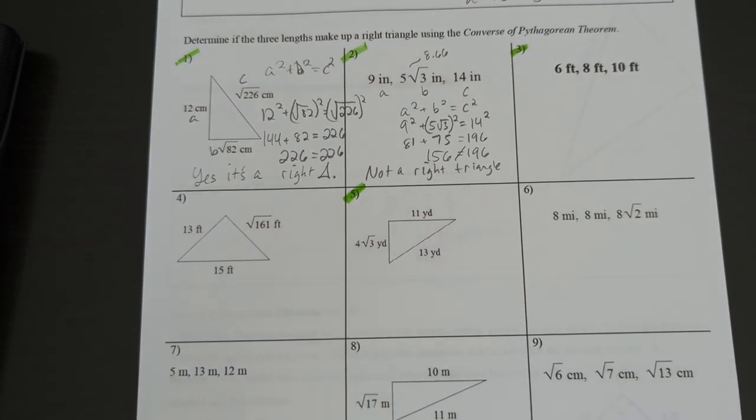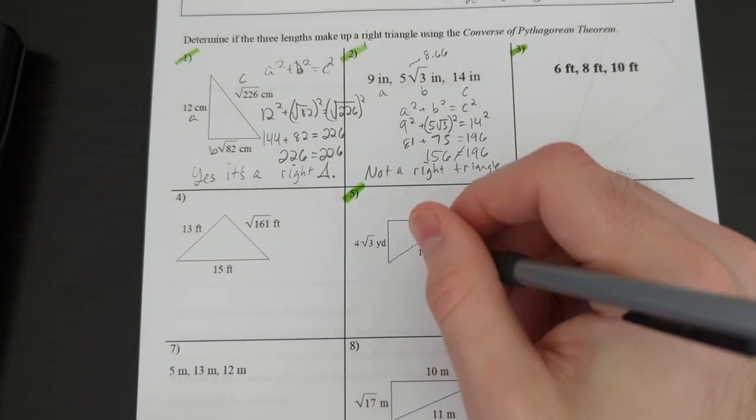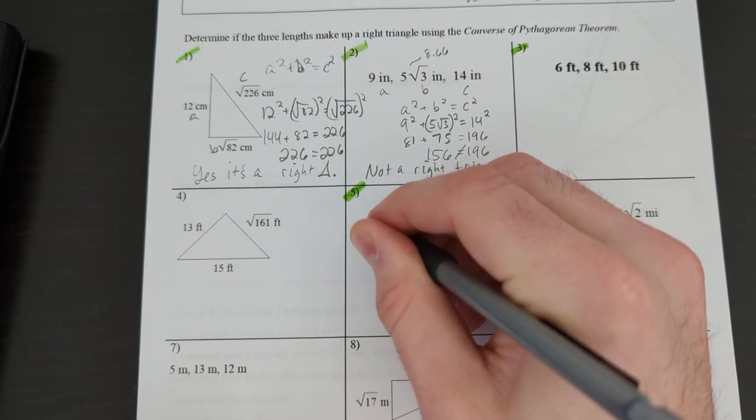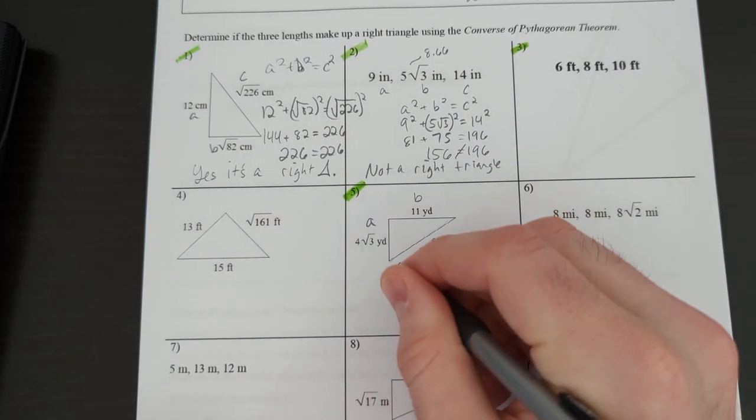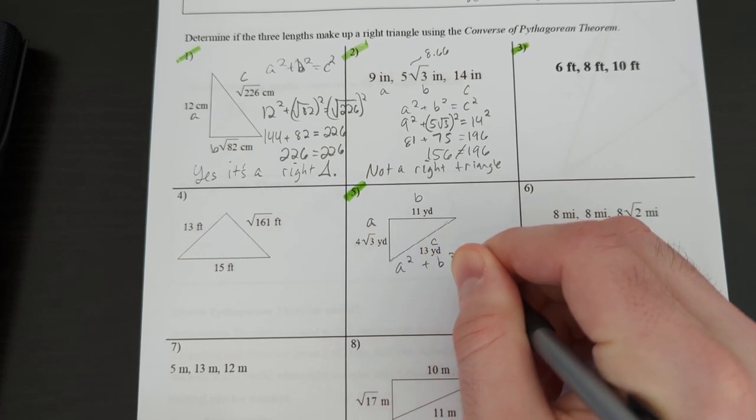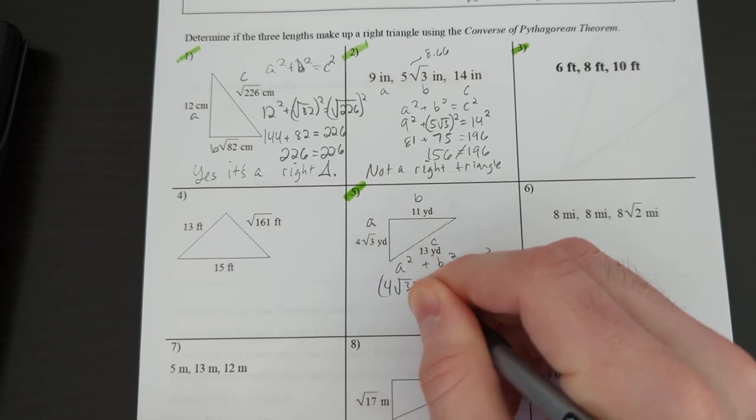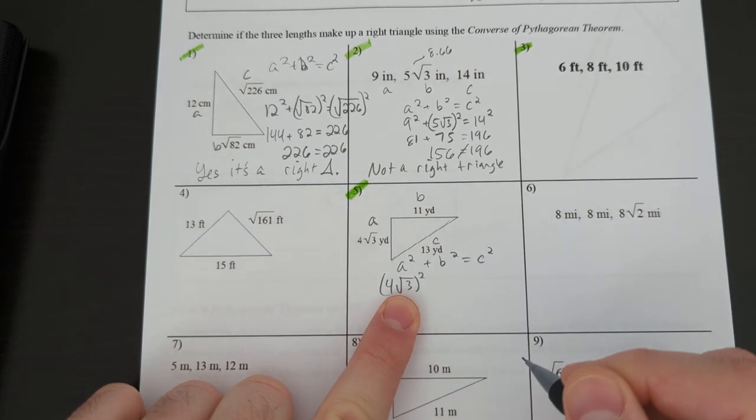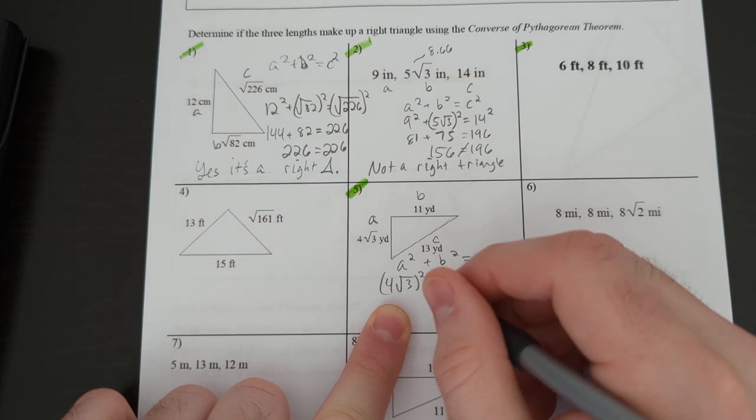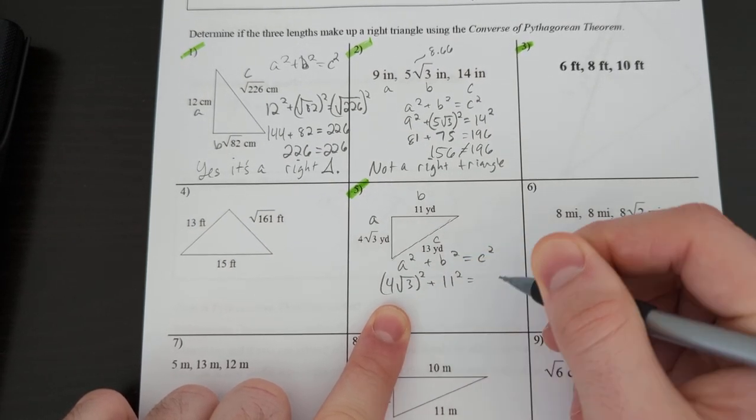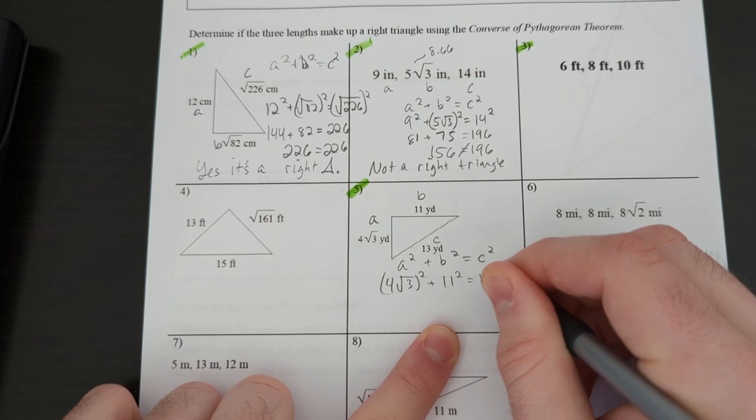So again, from the picture, judging by the look of it, this would be our hypotenuse. Is this a right triangle? So we're testing this. We're going to make that one C, we're going to make that one A, and that one B. A squared plus B squared equals C squared. A, 4 root 3. We are not going to forget our parentheses around that coefficient and the radical. So B is 11 squared. And then C, 13 squared.